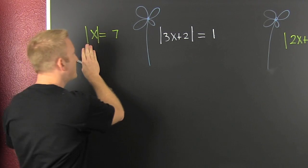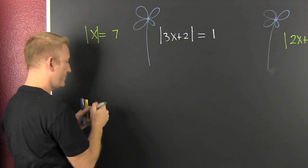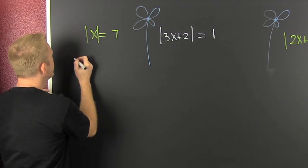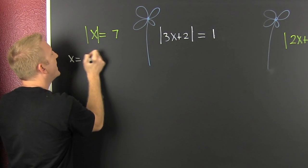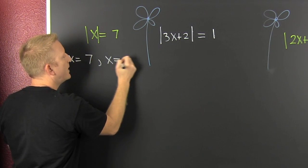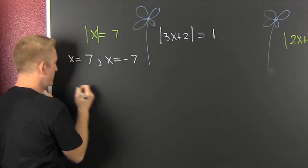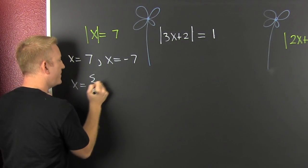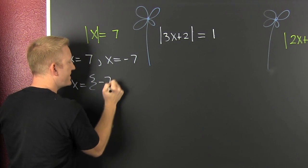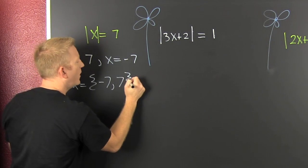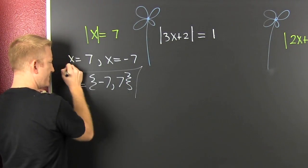So either this stuff is positive or this stuff is negative. And that's the right stuff. It's either 7 or minus 7. Then wrap it up in one nice curly package. It's either minus 7 or 7. And no, order doesn't matter. It's a set.